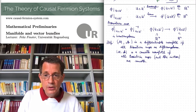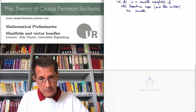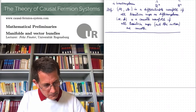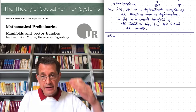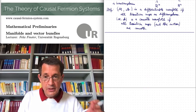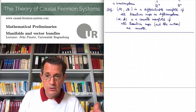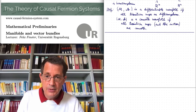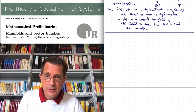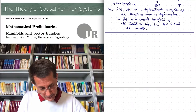Let me now move on to bundles — to vector bundles. What is a vector bundle? There are different levels of generality here. I thought it's best to start with a topological vector bundle. It doesn't even need to be a manifold — just topological spaces with some additional properties. Then I will also explain that usually a vector bundle is a smooth manifold.